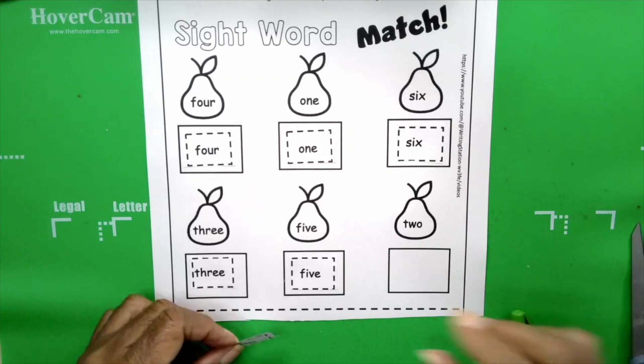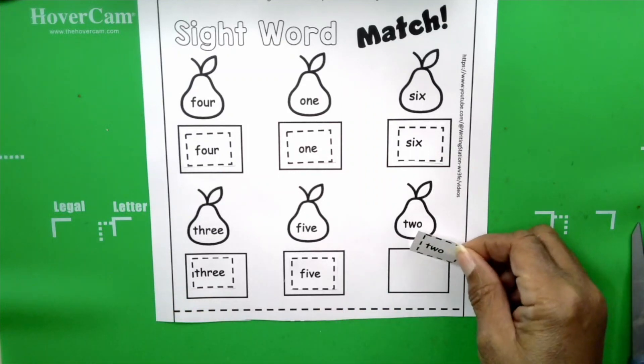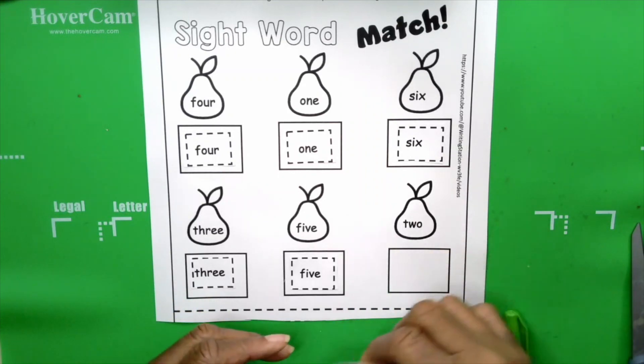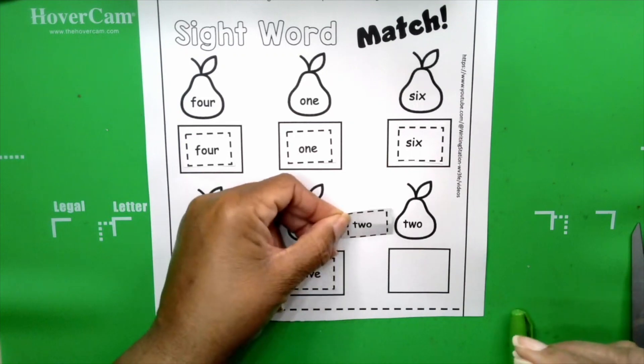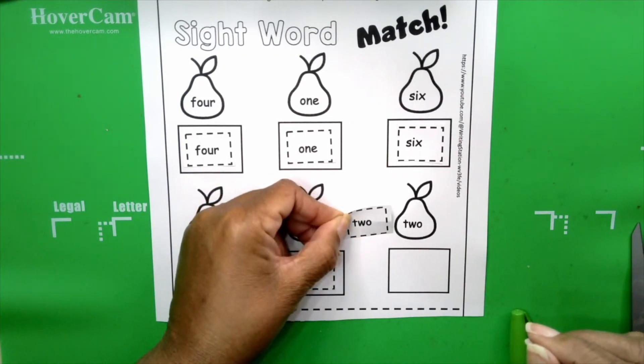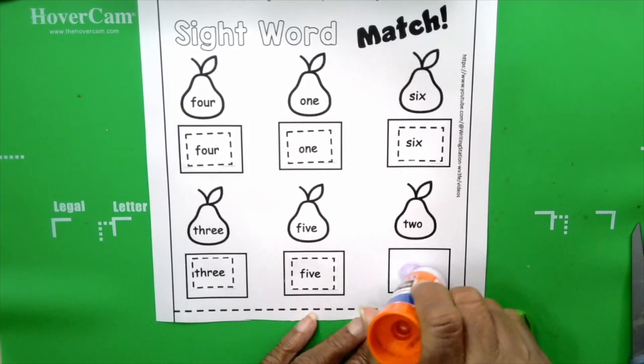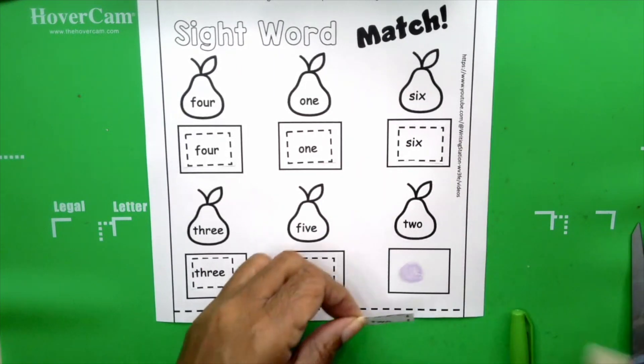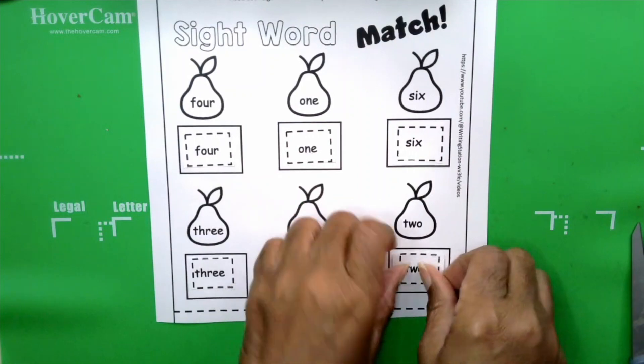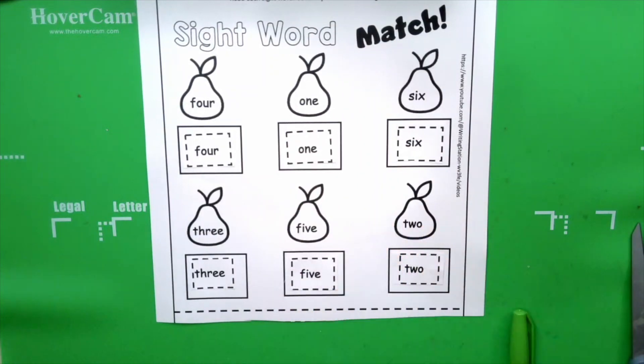The next word is two. Two. Let's spell two. T-W-O. T-W-O. The number word two. Okay, we did it, boys and girls. That was great. You really know how to follow directions.